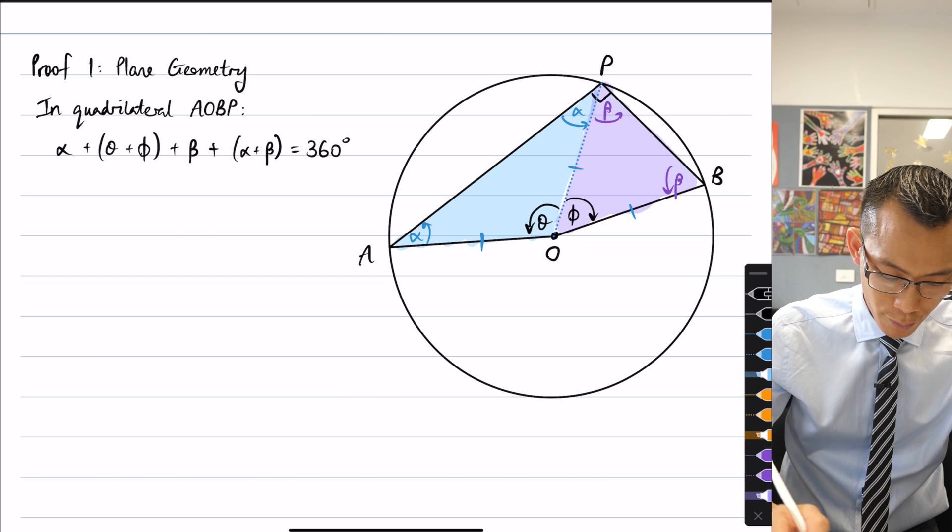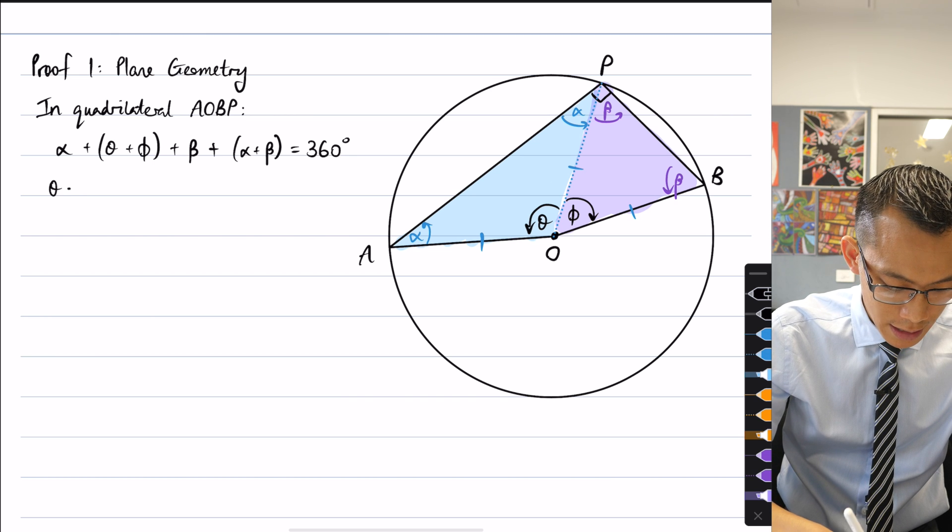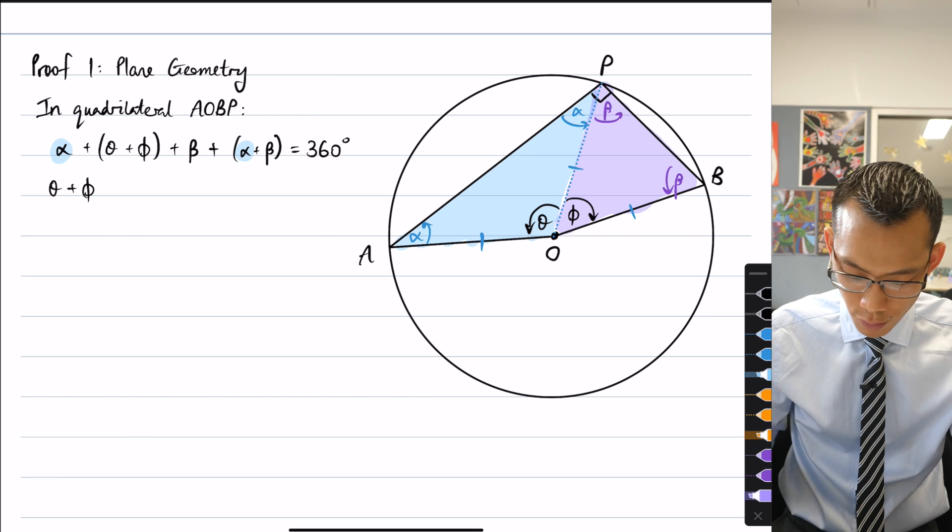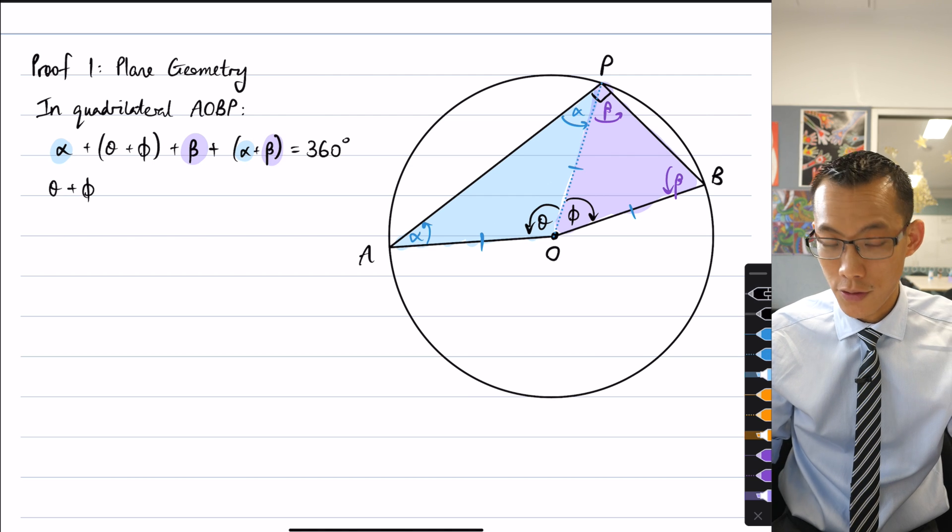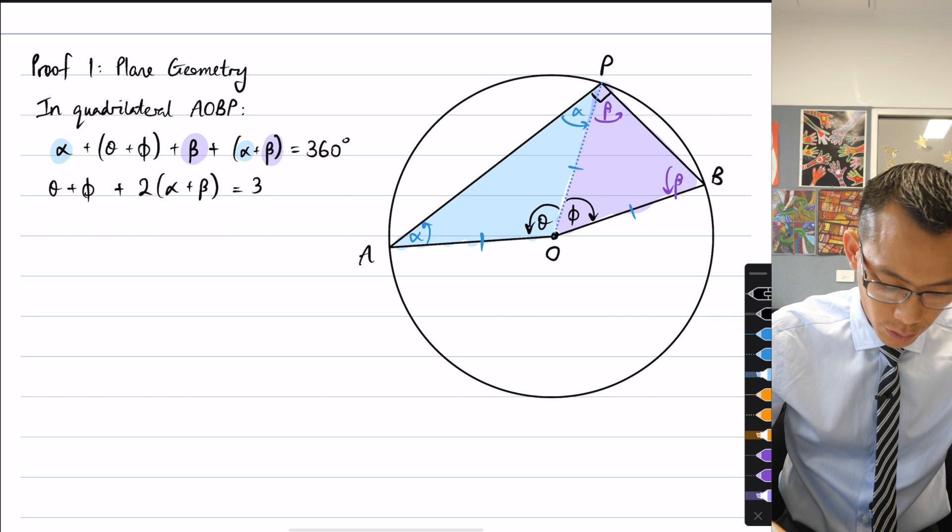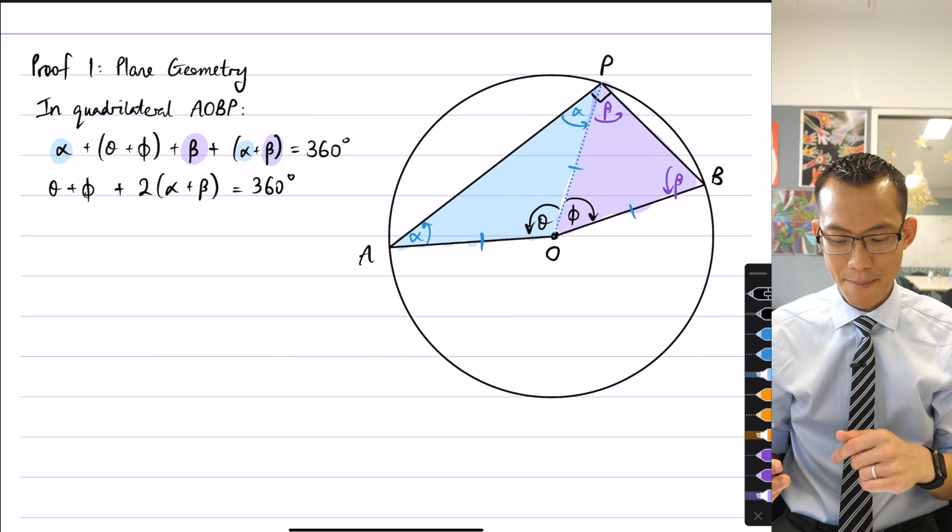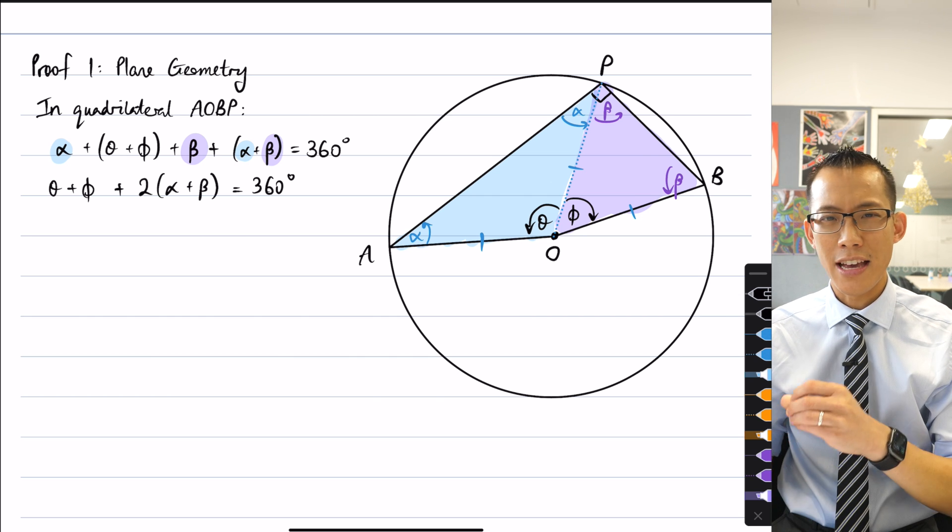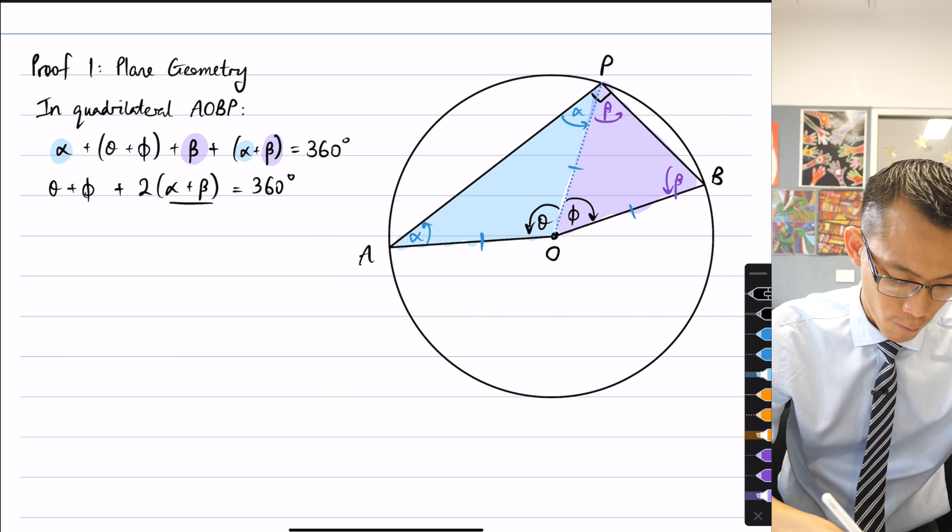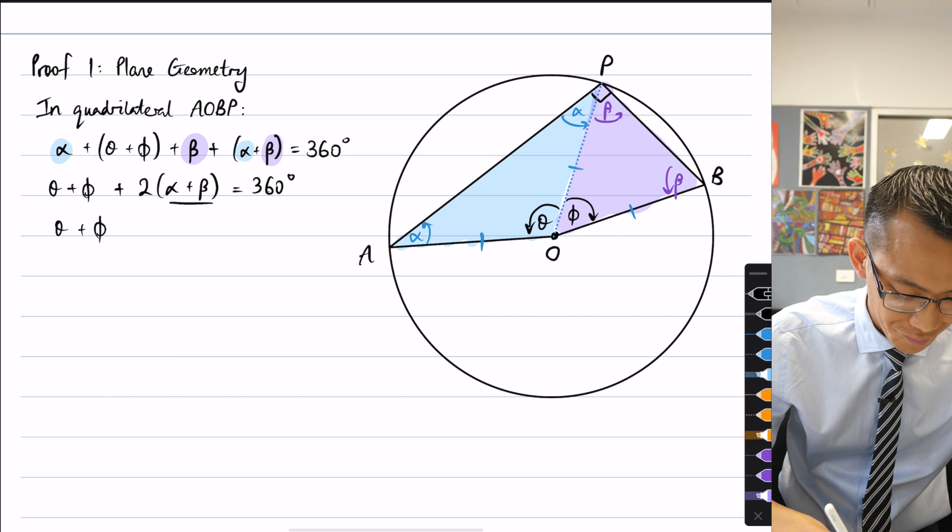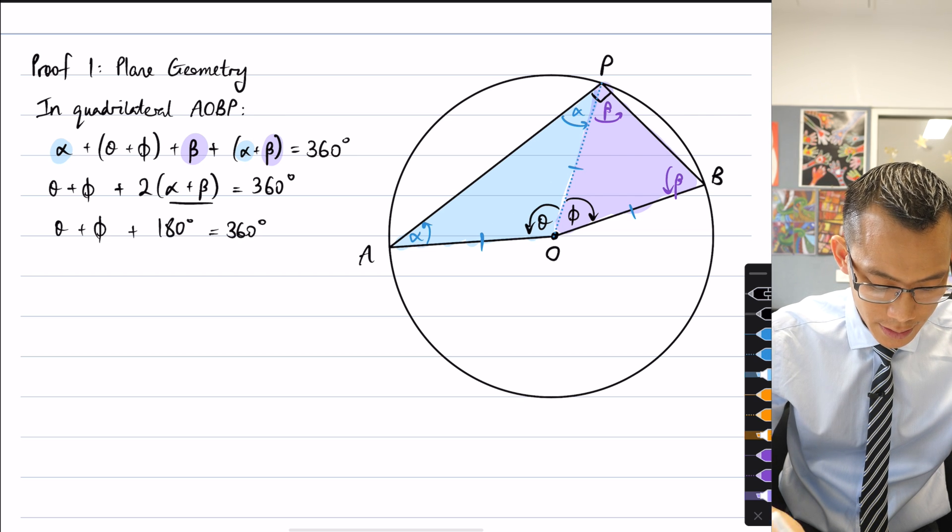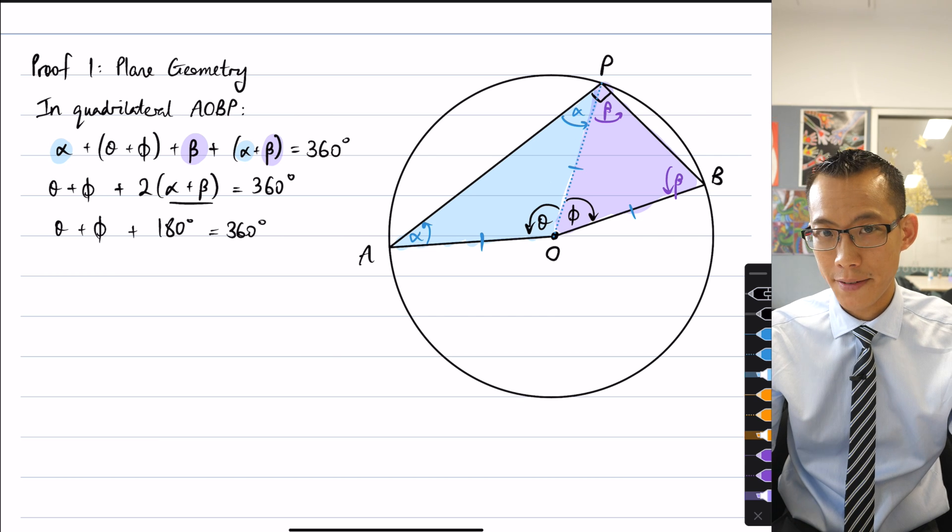So now what I can do is just a little bit of rearrangement. If I put this theta plus phi over to the left hand side, and then if you have a look at what you have remaining, there's the two alphas that I made before and there's the two betas in their respective triangles, so they're going to be double alpha plus beta, and that's equal to 360. And now I can use the fact that because alpha plus beta being 90 degrees is my starting point, not my ending point, I can bring that in. I can substitute that in for this alpha plus beta that I can see here. So this is going to be theta plus phi equals - plus rather - two times 90, so that's 180 degrees equals 360. So my reason for that is that alpha plus beta is equal to 90.